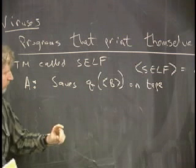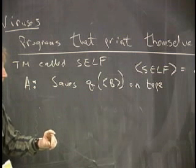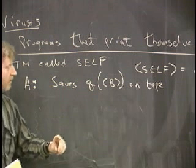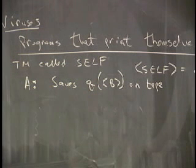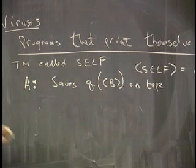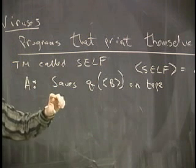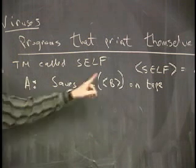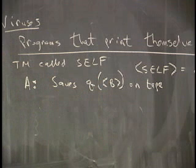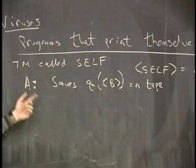It puts on the tape an encoding of a Turing machine whose job it is to do nothing but print out the description of b. Now the thing is, we don't know what this should do right now because we don't know what b is. So let me explain what b does. Hold off because we can't really finish this step or know the details until we do this.